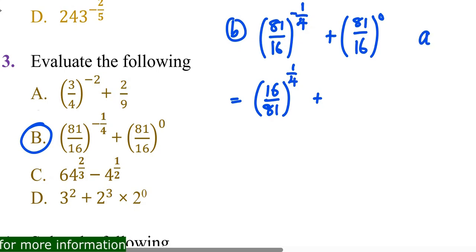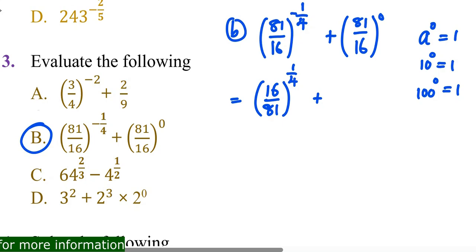For the second term, remember: according to the laws of indices, anything raised to the power 0 is 1. So 81/16 to the power 0 equals 1. That means you have (16/81)^(1/4) + 1. Now write 16 to the power 1/4 over 81 to the power 1/4, plus 1.